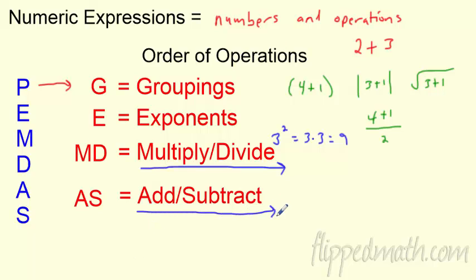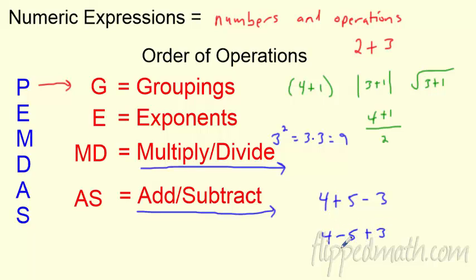So if I have 4 plus 5 minus 3, I add first because it shows up first. If it was 4 minus 5 plus 3, I would do 4 minus 5 first because subtraction shows up first. We always go left to right. That is order of operations and numerical expressions.